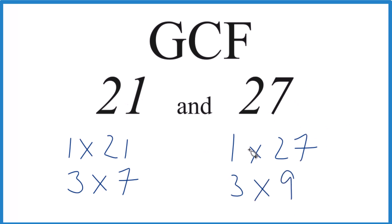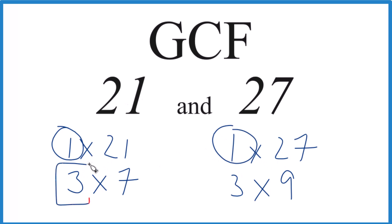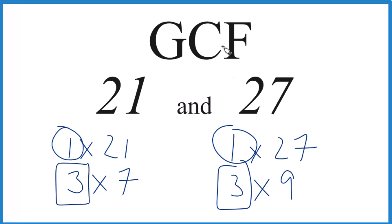So let's find the factors that are in common and then choose the greatest. They both have 1, so that's in common, and then it looks like 3 — that's it. So 3 is the greatest factor that goes into both 21 and 27 evenly. So in answer to our question, the greatest common factor for 21 and 27 is 3.